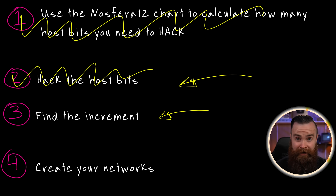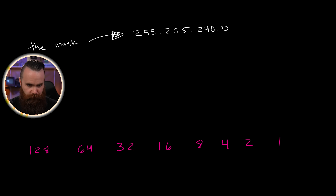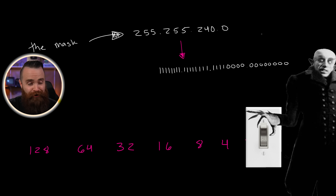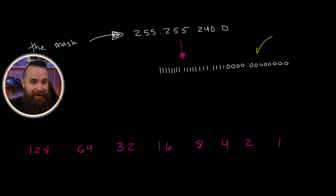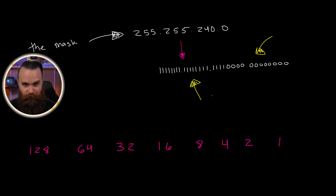With a bit of help from our friend Nosferatu, we first have to convert our subnet mask from decimal to binary — the language computers love. Our mask is 255.255.240.0. Using our chart, Nosferatu hits the lights and we convert to binary — there is our subnet mask in binary. While we're here, what is the subnet mask in slash notation? We count the contiguous network bits: 8, 16, 17, 18, 19, 20 — we've got a slash 20.